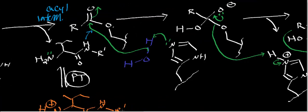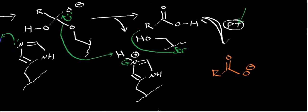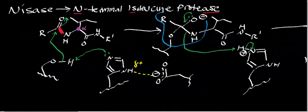Now we have an acyl-enzyme intermediate. The histidine, newly reformed in the deprotonated state, deprotonates water. The effective hydroxide attacks the acyl intermediate carbonyl carbon, generating a second tetrahedral intermediate. The pi bond reforms, kicking off serine as it abstracts a proton from histidine, and we generate a carboxylic acid that undergoes another proton exchange with solution to give the carboxylate.